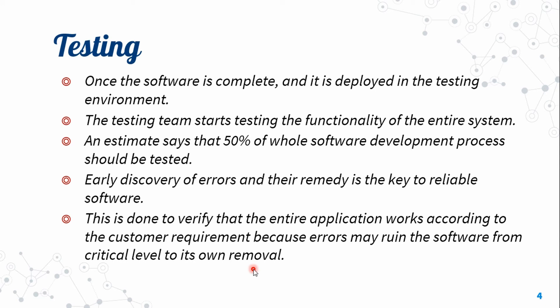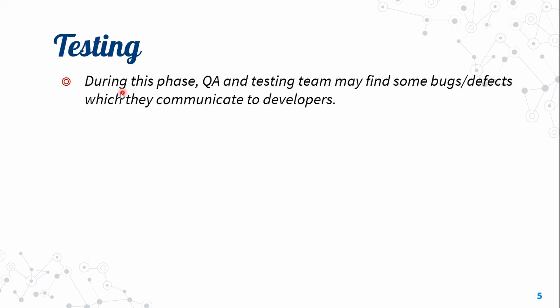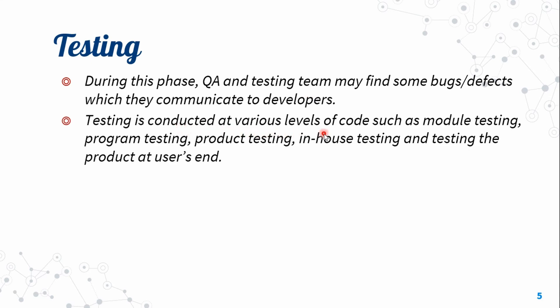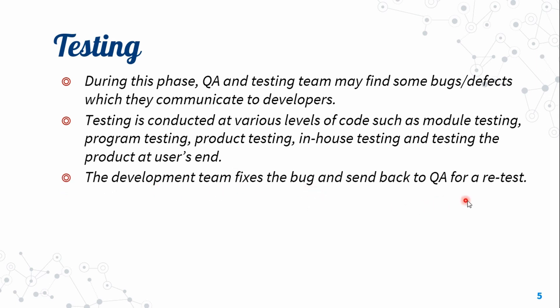During this phase, the quality assurance and testing team may find bugs and defects, which they communicate to developers. Testing is conducted at various levels of code such as module testing, program testing, product testing, in-house testing, and testing the product at the user's end. The development team fixes the bugs and sends them back to the quality assurance team for a retest.